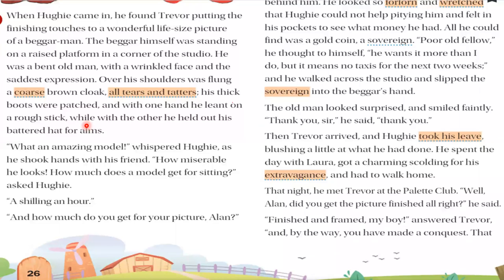'What an amazing model!' whispered Hughie as he shook hands with his friend Alan Trevor. He said it in a very low voice: 'The model is very wonderful. How miserable he looks! How much does the model get for sitting?'